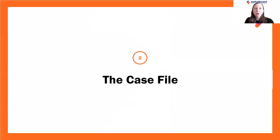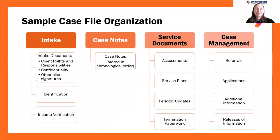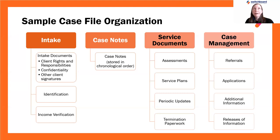Now we're going to talk about the types of documentation that you'll find in a typical case file in greater detail. This slide shows an example of how a paper case file may be organized. Your agency likely already has a system in place, or you may utilize an electronic record keeping system. Either way, keeping your documentation organized will help increase your efficiency as a case manager. This graphic shows how a sample case file is divided into four sections. The first section groups all of your intake documents together — anything the client needed to sign or fill out to initiate services, such as their rights and responsibilities form, consent forms, and copies of their identification or income verification.